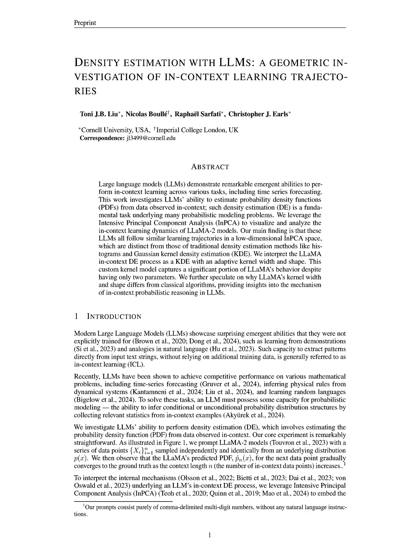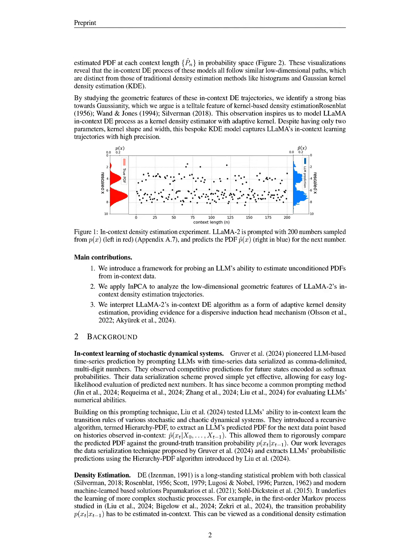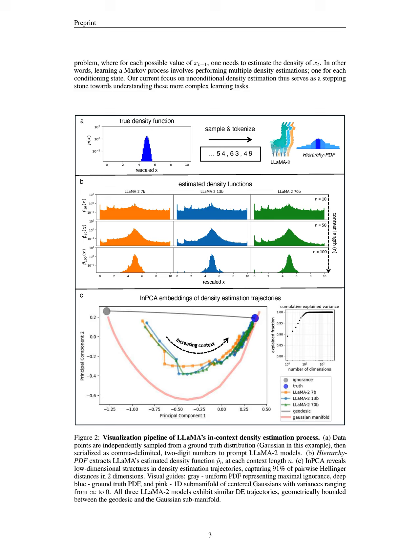This work aims to fill the gap in existing research regarding the internal mechanisms of LLMs during in-context learning, particularly in the context of probabilistic modeling and density estimation. By employing intensive principal component analysis, iPCA, to analyze the geometric features of LLaMA2's DE trajectories, we reveal a strong bias towards Gaussianity, suggesting that LLaMA's in-context DE process can be interpreted as a form of adaptive kernel density estimation. This interpretation provides insights into the model's learning dynamics, which have not been thoroughly explored in prior studies.